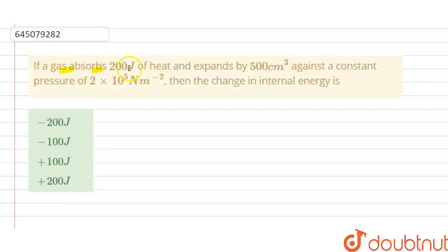Hello students, today our question is: if a gas absorbs 200 joule of heat and expands by 500 centimeter cube against a constant pressure of 2 into 10 power 5 newton per meter square, then the change in internal energy is. Options are given here.